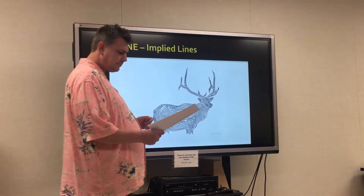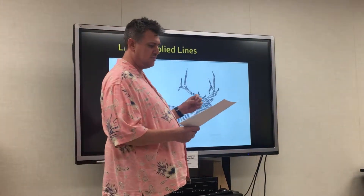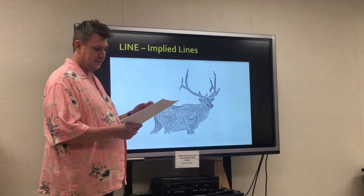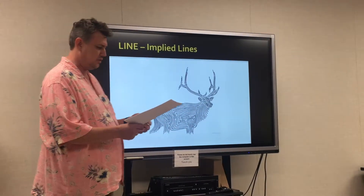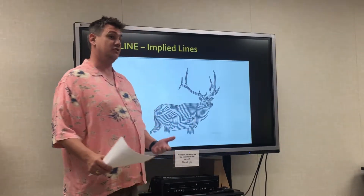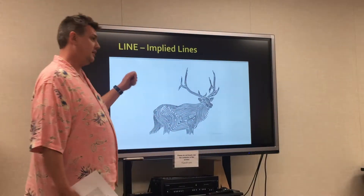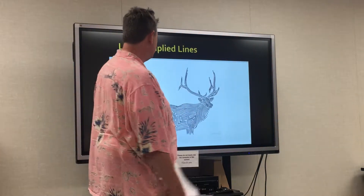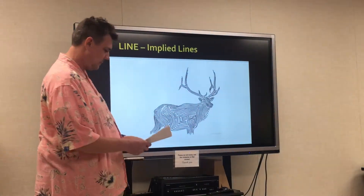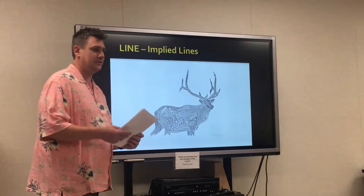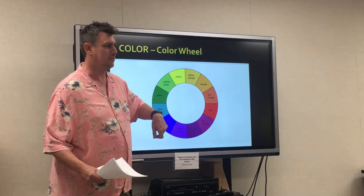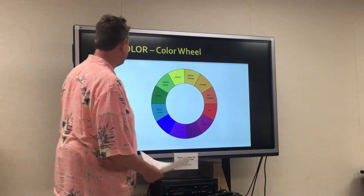Implied lines are not actually drawn but created by a group of objects seen from a distance — the direction an object is pointing or the direction a person is looking. Here we have a deer: we clearly haven't actually drawn a deer, but a series of implied lines that, when we step back and look, we have a deer.